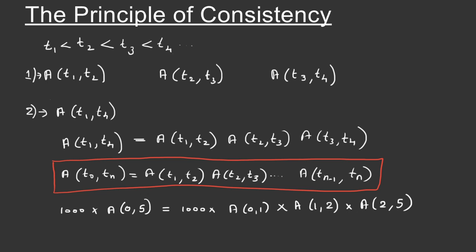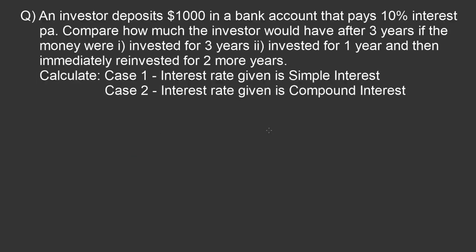Let's understand more about this with a numerical example. An investor deposits $1,000 in a bank account that pays 10% interest per annum. Compare how much the investor would have after three years if the money were: (1) invested for three years, or (2) invested for one year and then immediately reinvested for two more years. Calculate for case 1 where the interest rate is simple interest, and case 2 where the interest rate is compound interest.